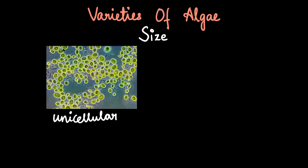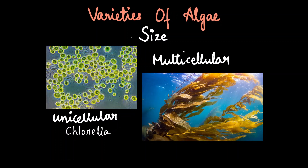Next is the size of the algae. Algae could be unicellular — what you're looking at here is a species called chlorella. Or they could be multicellular. These multicellular algaes grow so big that they actually look like a plant. This is what you saw at the start of the video — this is a kelp, and kelp is a marine brown algae.